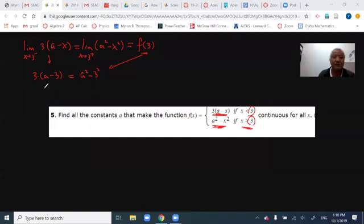So you've got the equation. The rest of the work, just simply solve it. So this one times this one, 3A minus 9, equals A squared minus 9. So 9, 9 cancel. So you have 3A equals A squared.